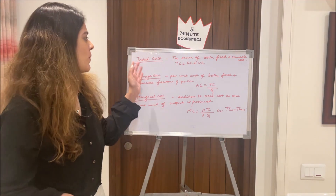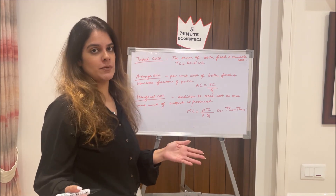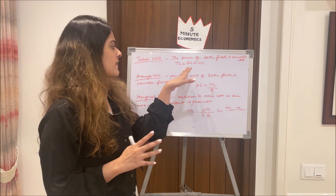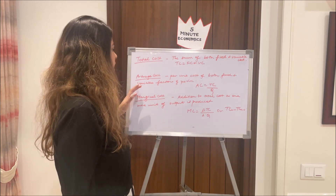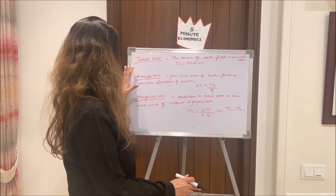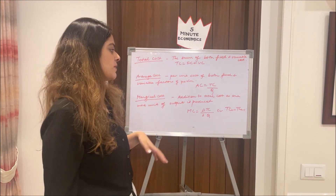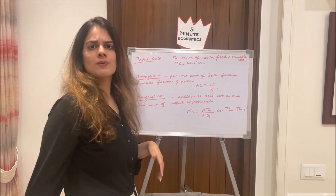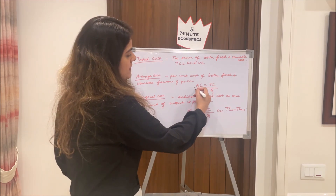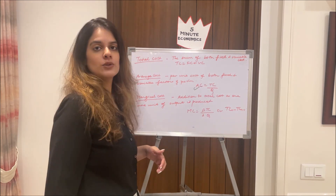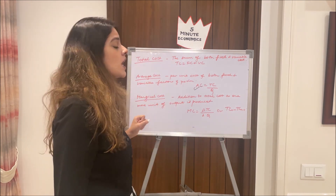To conclude, three more important types of cost. Total cost is the sum total of both fixed and variable cost: TC = FC + VC. Average cost is the per unit cost of both fixed and variable factors of production. If we have the total cost and quantity in hand, we can calculate average cost using the formula: AC = TC / Q. Remember these formulas, as many numerical problems are asked based on them.